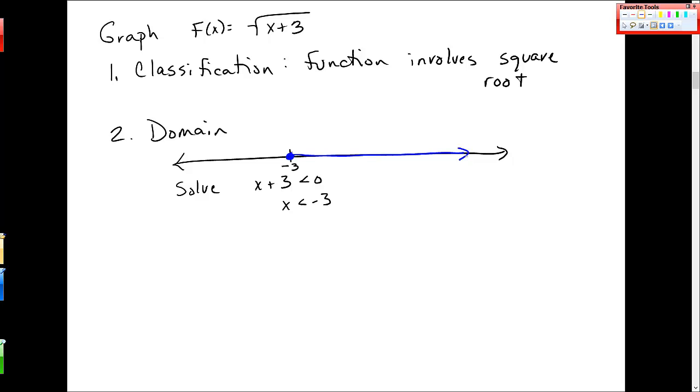So, if you want to test a couple points, you'll see that when you plug in negative 3 plus 3, you get square root of 0. That's fine. That's 0. If you plug in the point to the left, the next point to the right is negative 2, negative 1, 0. So negative 2 plus 3 is square root of 1. That's totally fine.